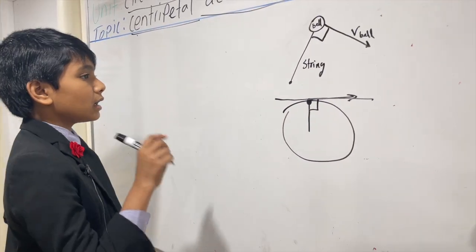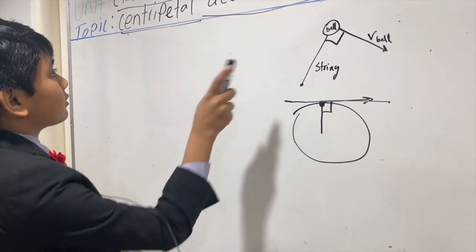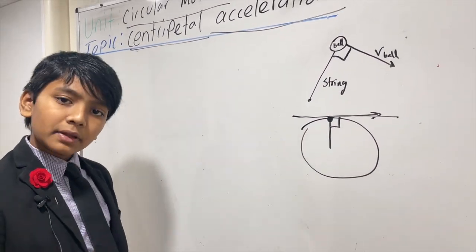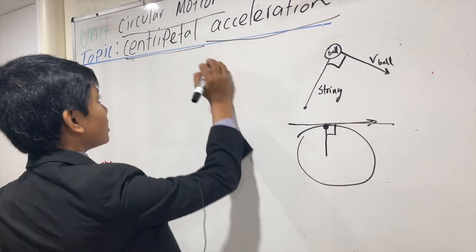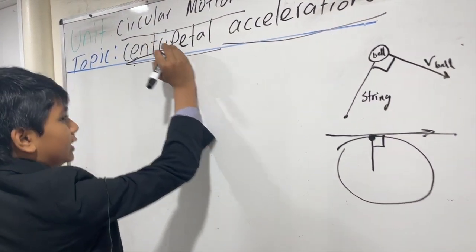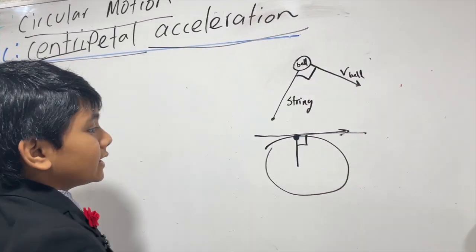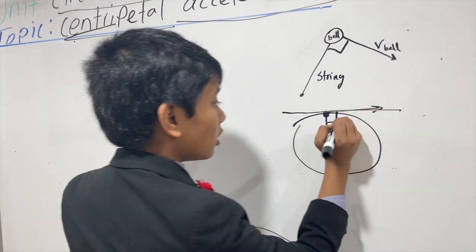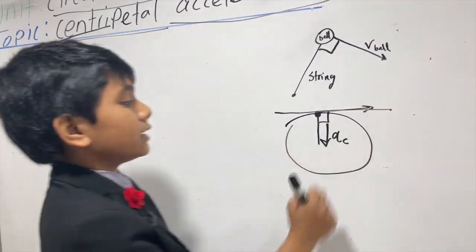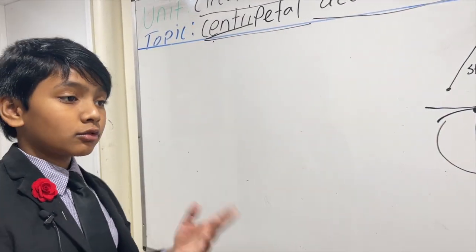So, what is centripetal acceleration, anyways? Well, centripetal acceleration is, well, it's called centri for a reason, because it's the acceleration towards the center of a circle. It's denoted with AC. Why is it towards the center?